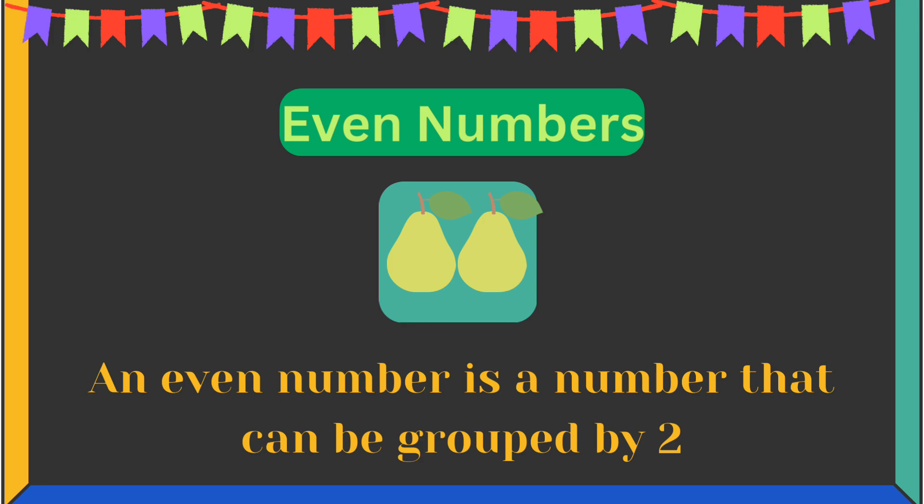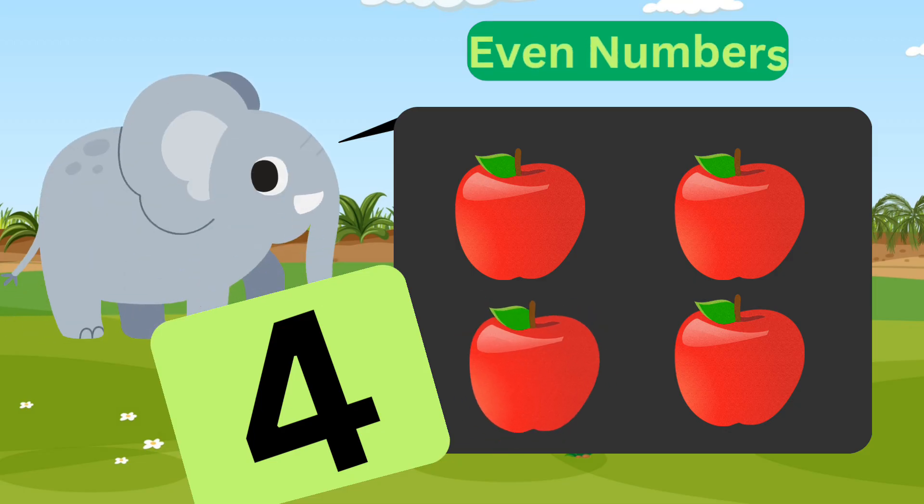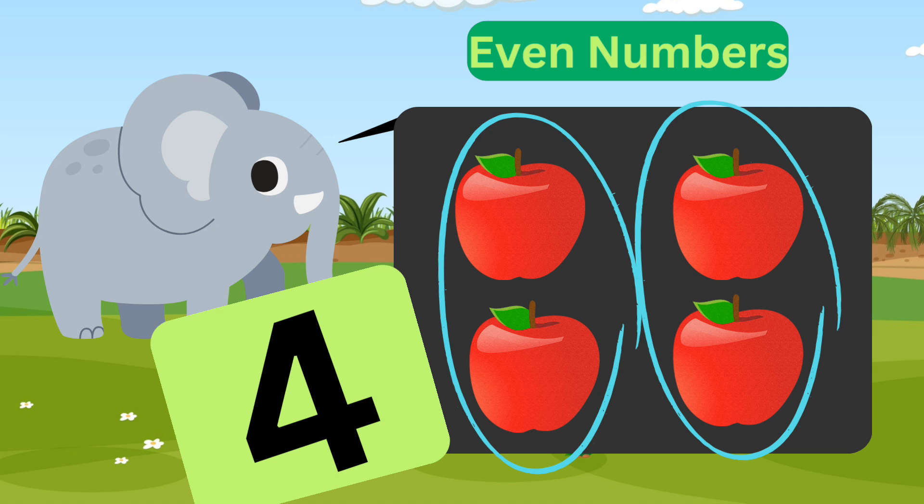An even number is a number that can be grouped by two. Look here, we have four apples. Four is an even number, but why is that? Easy! If we make groups of two, there would be no apples left over.